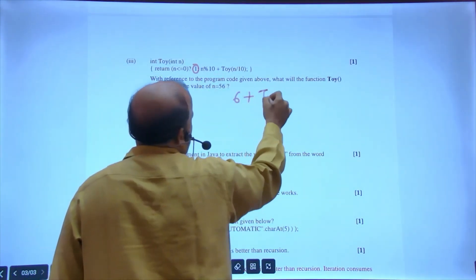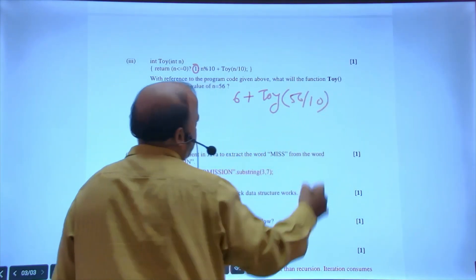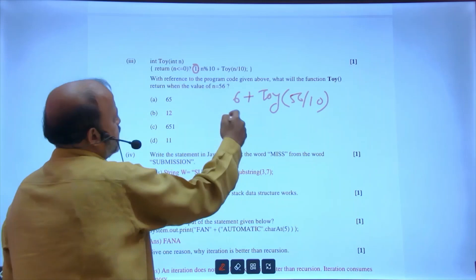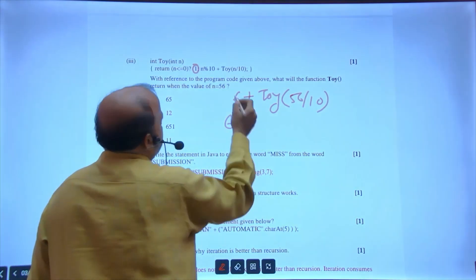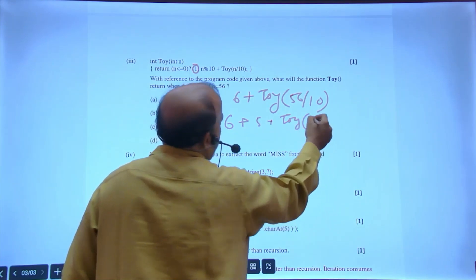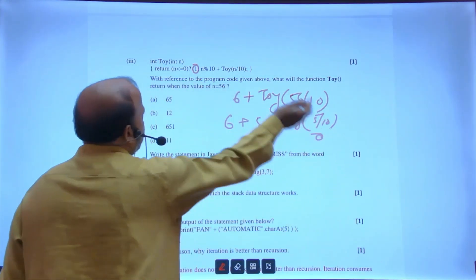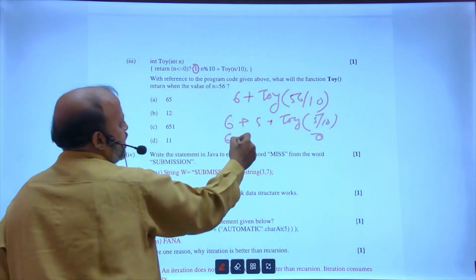You're getting 6 plus again recursion. It's called 56 by 10, so again recursively it's called 6 plus, you'll get again 5 plus toy. Again called, and now it's 5 by 10 that equals 0.